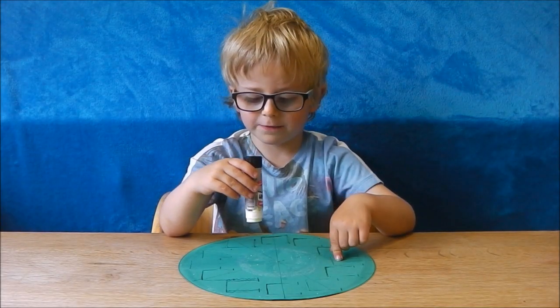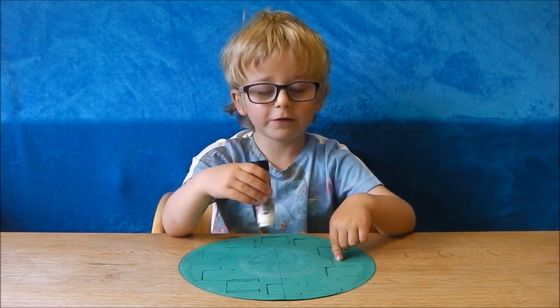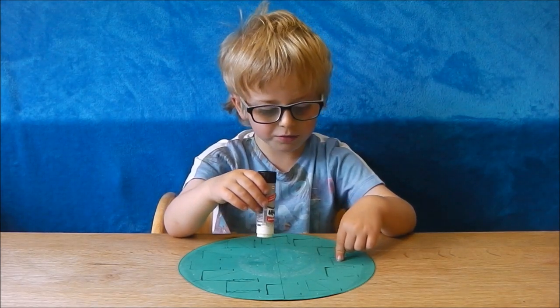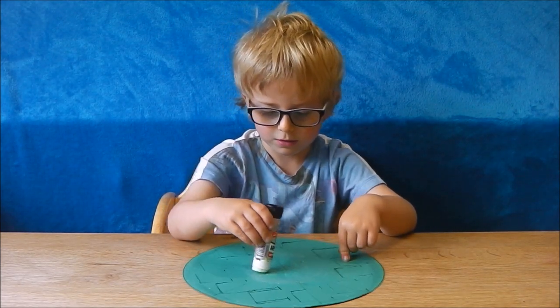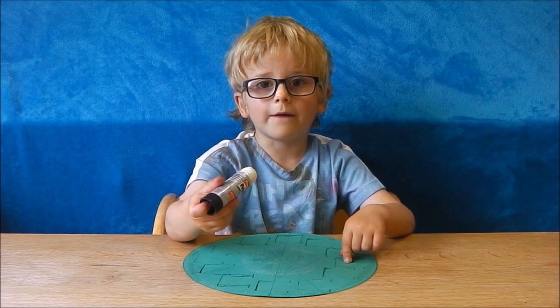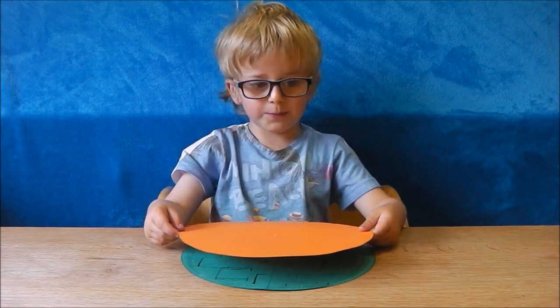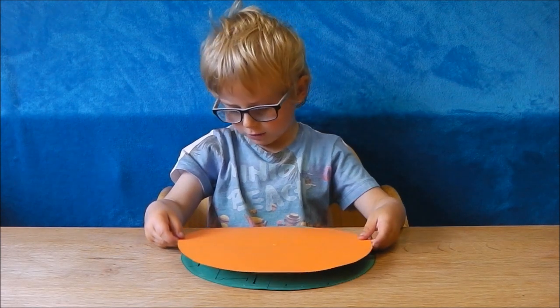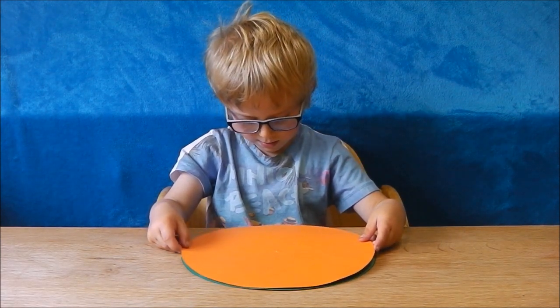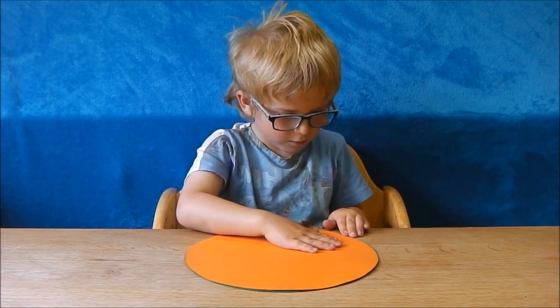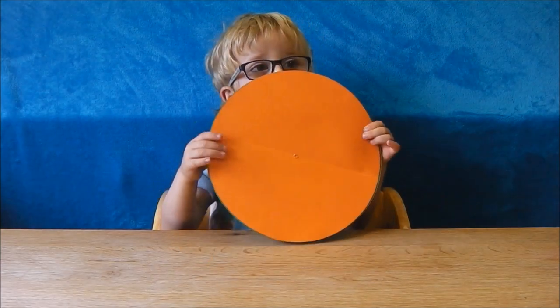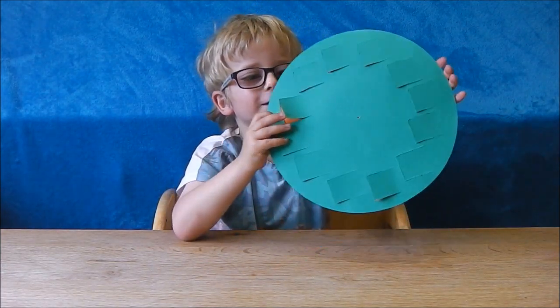Glue on the back of the green bit of card, but make sure you don't glue on the doors. Otherwise you'll stick them down forever. Stick the orange bit of card on the green bit of card. Like that. Then it should look like this.